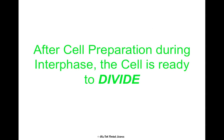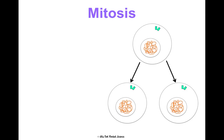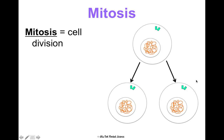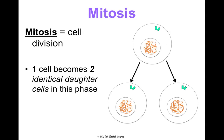After the cell is prepared during interphase, it's ready to divide — that's when mitosis begins. Mitosis is PMAT: prophase, metaphase, anaphase, and telophase. What's basically happening in mitosis is we're taking a cell and splitting it into two identical copies — mitosis is the cell division part. One cell becomes two identical daughter cells.